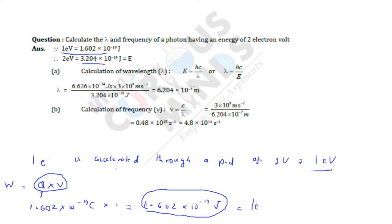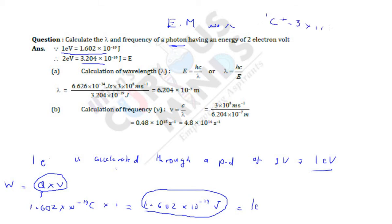You know E equals hc by lambda, and nu equals c by lambda, so lambda equals hC by E. We know the value of H and the value of C, since this is a photon — the photon travels at the velocity of light. The electromagnetic wave always has velocity C, which is 3 into 10 raised to 8. Always remember.